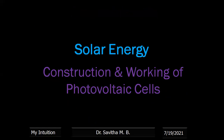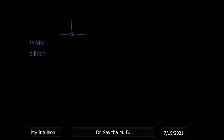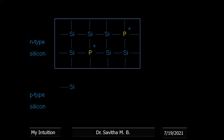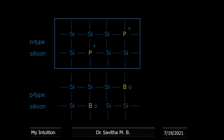Now let us discuss the construction and working of photovoltaic cells. In the n-type semiconductor, silicon is doped with phosphorous, which is pentavalent — it has extra electrons. In the p-type semiconductor, silicon is doped with trivalent impurities, which is shown by a hole. So the n-type and the p-type semiconductors are brought together and combined with one another.